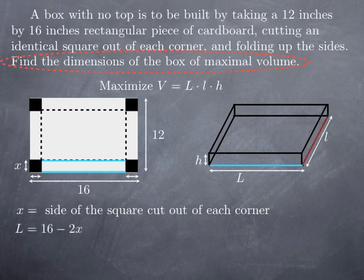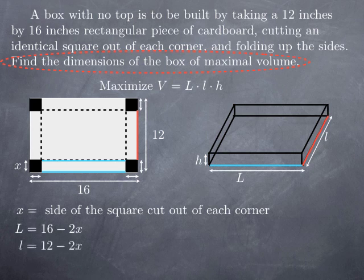Similarly, if I'm looking for little l in red here, it corresponds to this edge, this red edge on the flat piece of cardboard. And again, it is the full length of 12 inches, to which we take out two lengths of the square, in other words, 2x. So little l is 12 minus 2x.